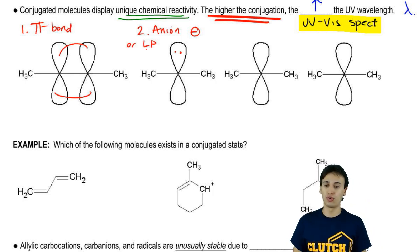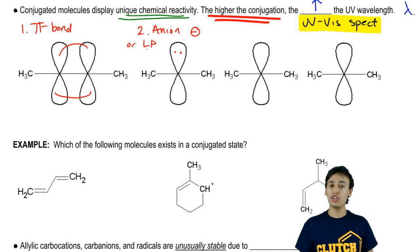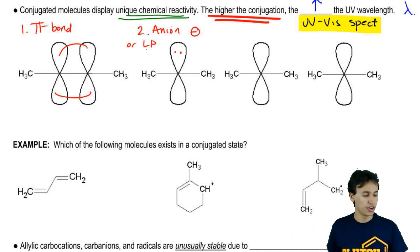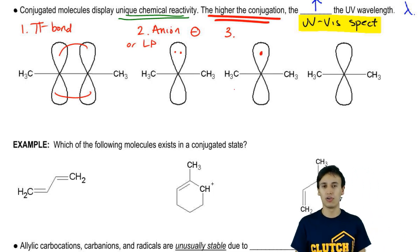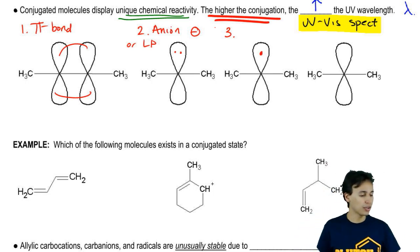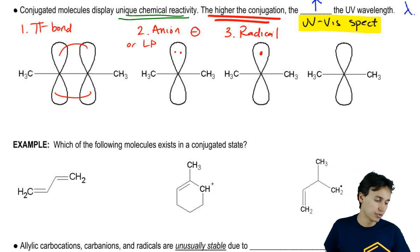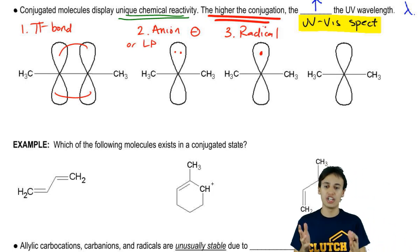That's what happens if you have two electrons in your orbital. But we know that you don't have to always put two. Another idea is, well, what if I just put one electron in the orbital? What's that called? That's called a radical. Radicals are also capable of resonance or conjugation.